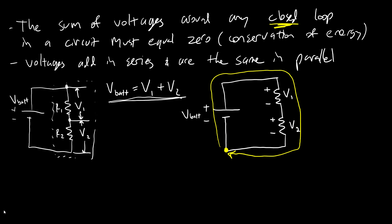And when I do this, I'm going to say that batteries add voltage, which is positive, and resistors drop voltage, which is negative.